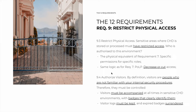9.4 is about authorizing visitors. By definition, visitors are people who are not familiar with your internal security procedures — they're not held by the same set of standards as your personnel, so they must be controlled. Visitors must be accompanied at all times in sensitive card data environments, with badges that clearly identify them. They must be accompanied so they're not alone with cardholder data, and they must have clear identification so they cannot blend in.